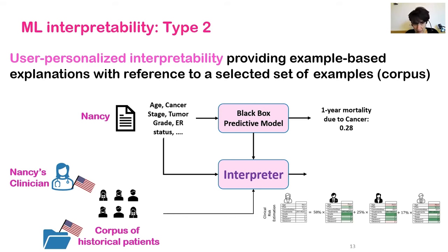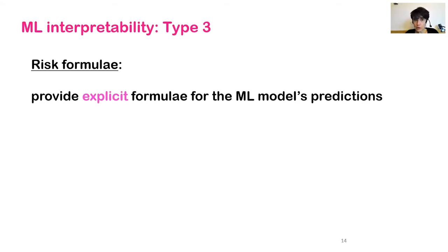For that we need a second type of machine learning interpretability — what we call user-personalized interpretability — where a particular user of the black box model, in this case Nancy's clinician, may want to obtain explanations of the model's predictions using a corpus of historical patients that the clinician has seen in the past. The method that Jonathan has developed called SimplEx is going to be able to do that — he's going to describe it in his presentation.